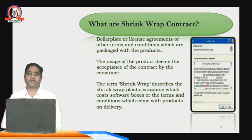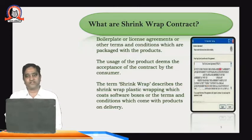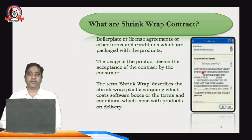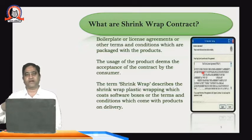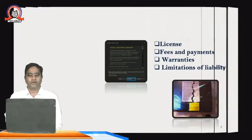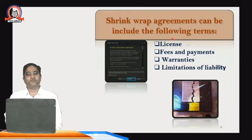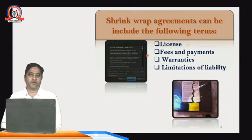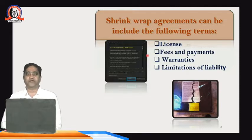The term 'shrink wrap' describes the plastic wrapping which coats the software boxes, and the terms and conditions which come with products on delivery are called shrink wrap contracts. Before the contract, it should be a shrink wrap agreement — proposal plus acceptance equals agreement. Agreement supported by consideration, where the buyer is buying a product online, equals a contract. Although it is not in written form but in digital form, the agreement is accepted by clicking 'I Agree', which makes it a shrink wrap contract. Terms included can cover licenses granted when installing apps on your cell phone, PC, or laptop.